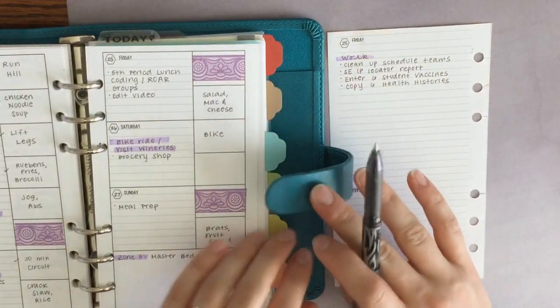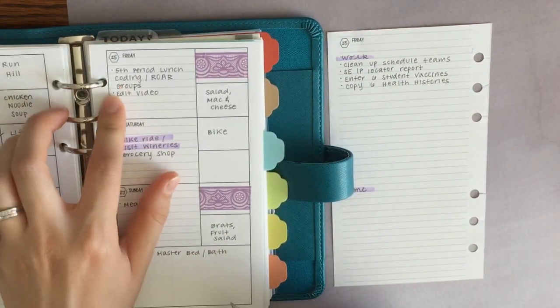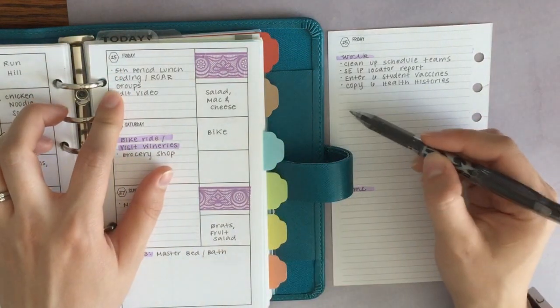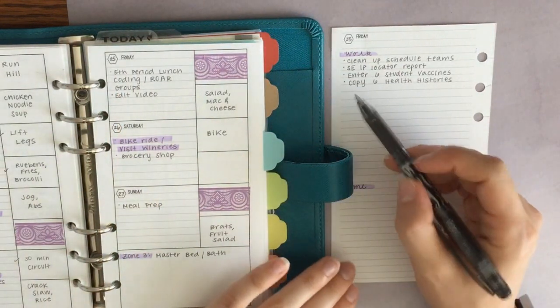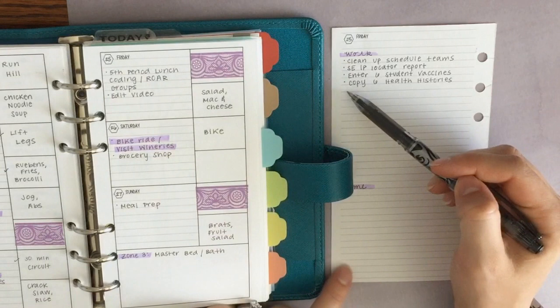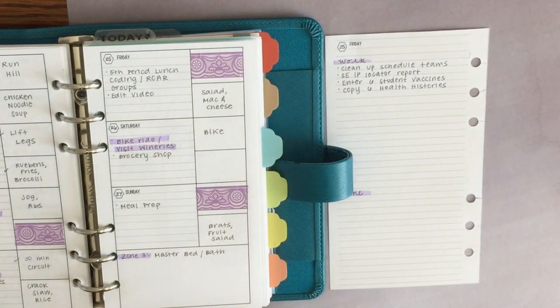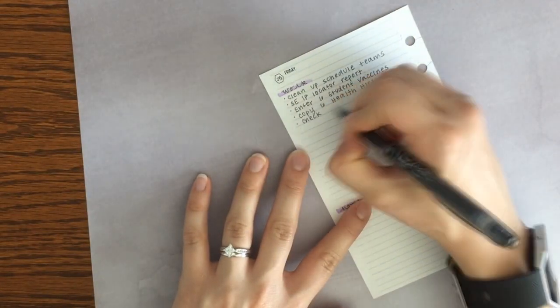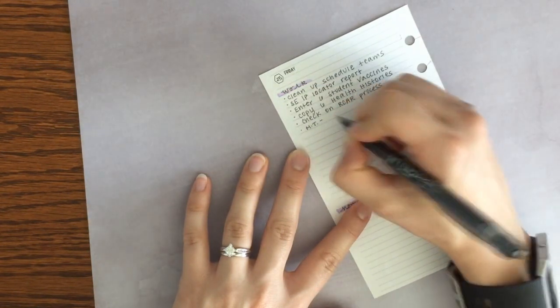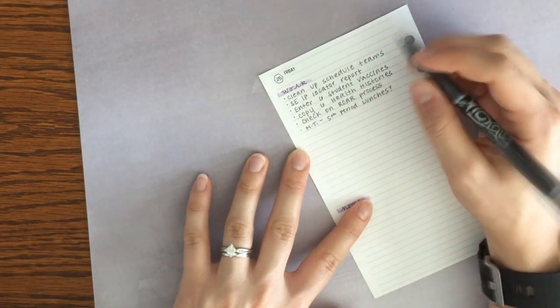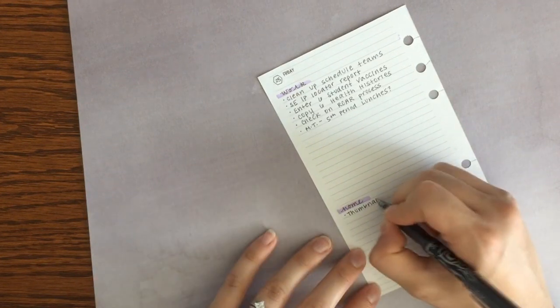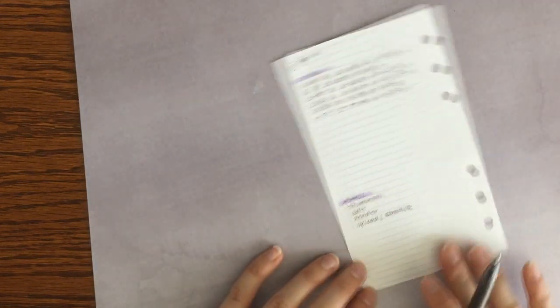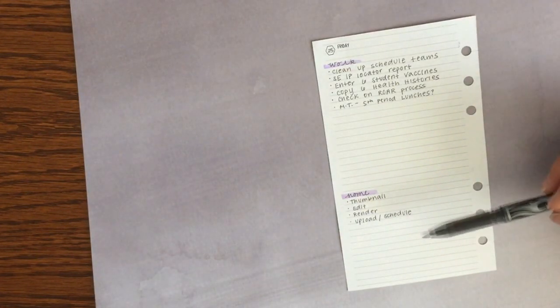The next thing that I'm gonna do in order to plan my day is I'm gonna look at the tasks that I have here on my weekly page for Friday, and I'm gonna break those down into their subtasks, or I'm gonna think of anything else that just popped up last minute today that I want to add to my work and home section for tomorrow.